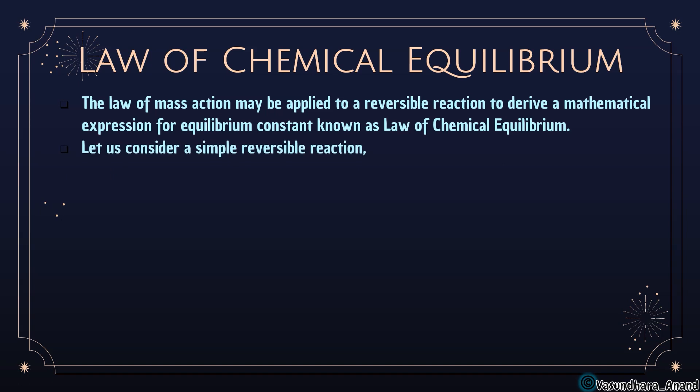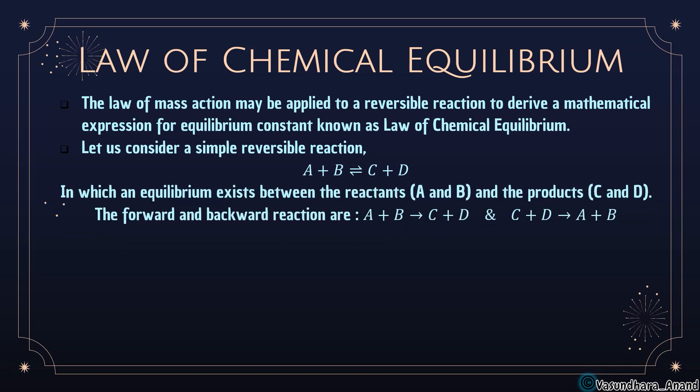Consider a simple reversible reaction: A + B ⇌ C + D. For the forward reaction the reactants are A and B, and for the backward reaction the reactants are C and D. The forward reaction is A + B → C + D and the backward reaction is C + D → A + B respectively.